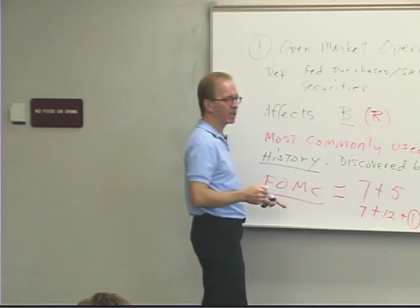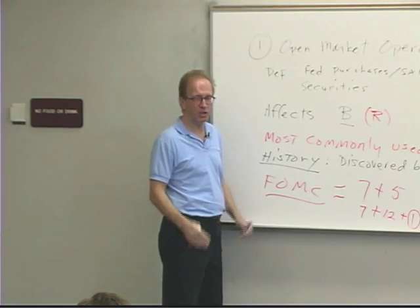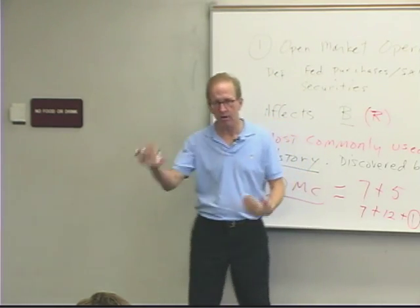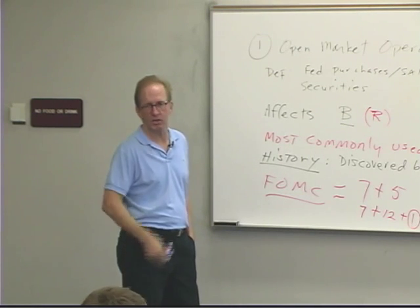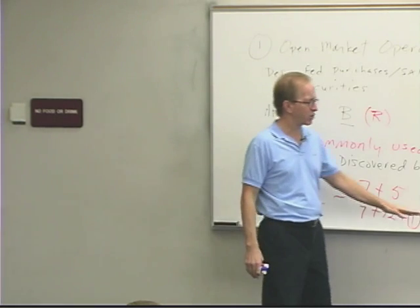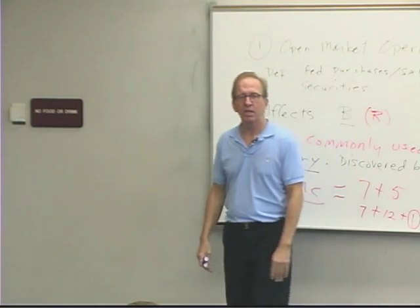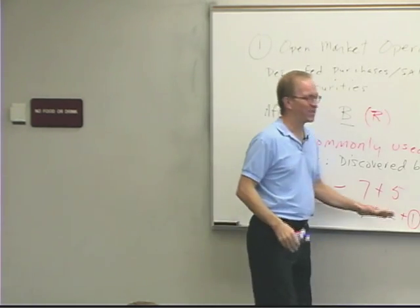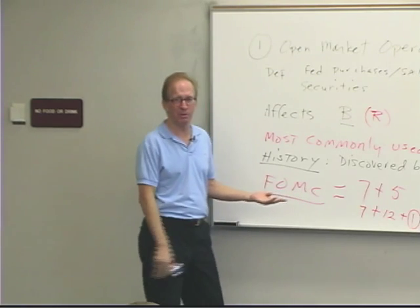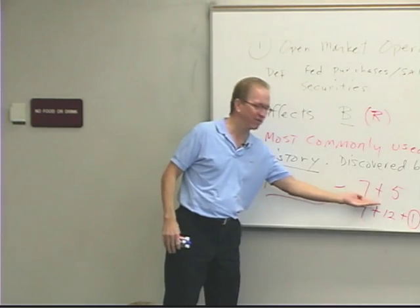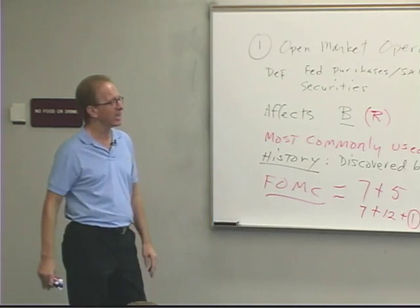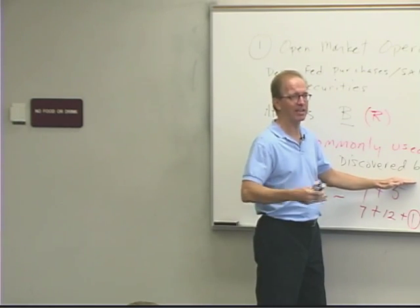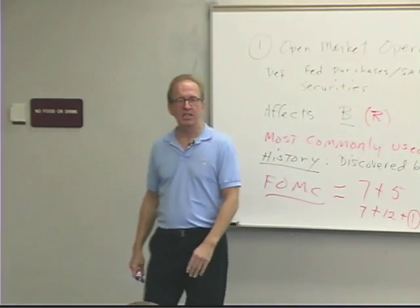The FOMC meets and issues a policy directive saying here's what we intend to do between now and our next meeting — basically, we're going to buy some bonds, for example. They tell the manager of the Open Market Desk, who then goes out and executes the order. These transactions take place in New York. One of the five bank president voting positions is always the president of the New York Fed, because that's where our financial capital and biggest banks are headquartered. The other four votes rotate among the remaining 11 Federal Reserve Bank districts.